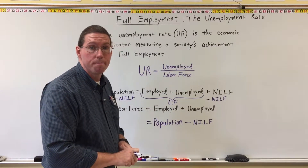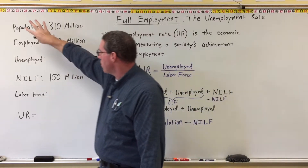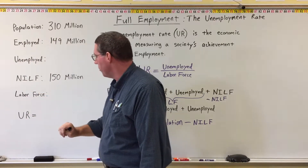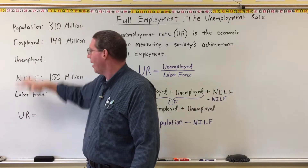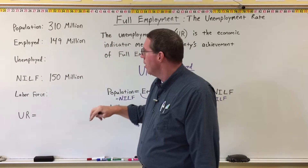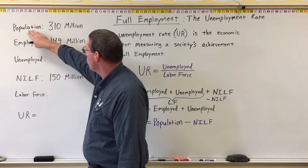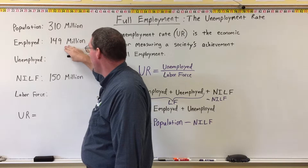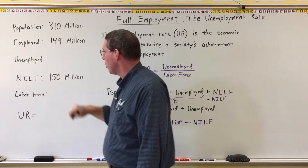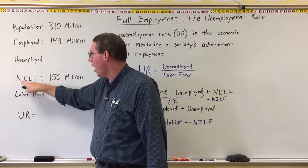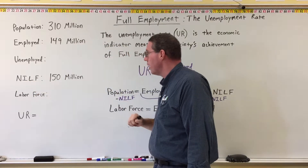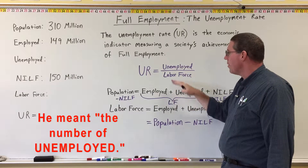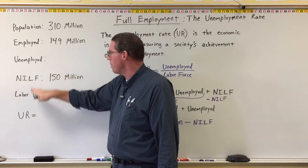Now that we have the formula, let's do some examples. There are five numbers we can start with and then calculate the unemployment rate, or we can start with the unemployment rate and calculate other statistics. In this first example, the population of the whole country is 310 million — very close to what the United States is. Those employed are 149 million. We don't know the number unemployed, but we do know there are 150 million people not in the labor force.